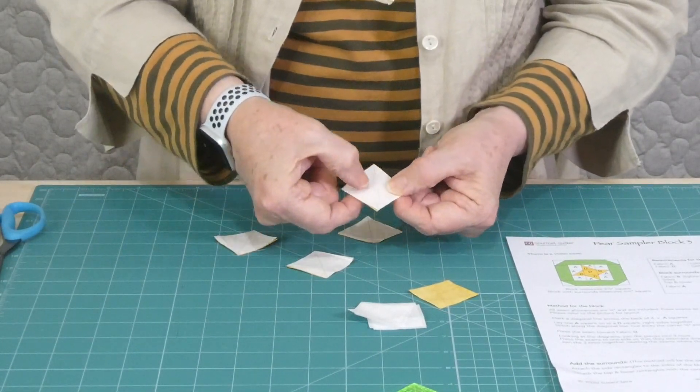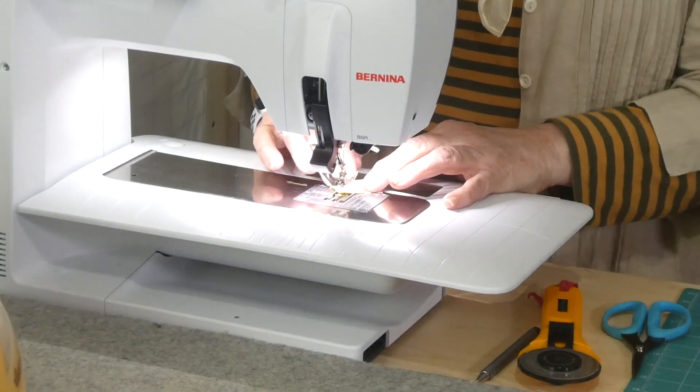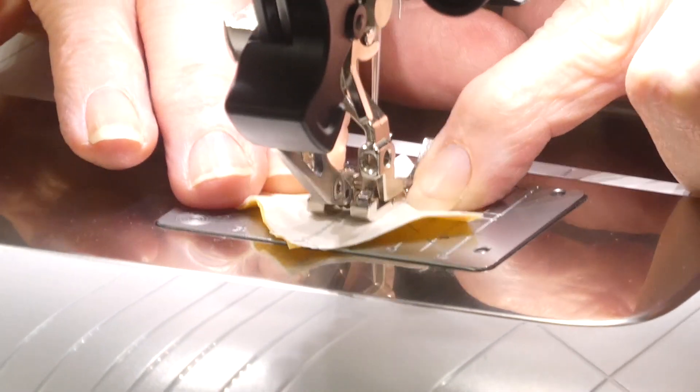So we're just going to sew on that line and then we're going to trim a quarter of an inch away from the sewing. So I'll go ahead and we'll get this stitched. I haven't done any stitching, I just got them ready.